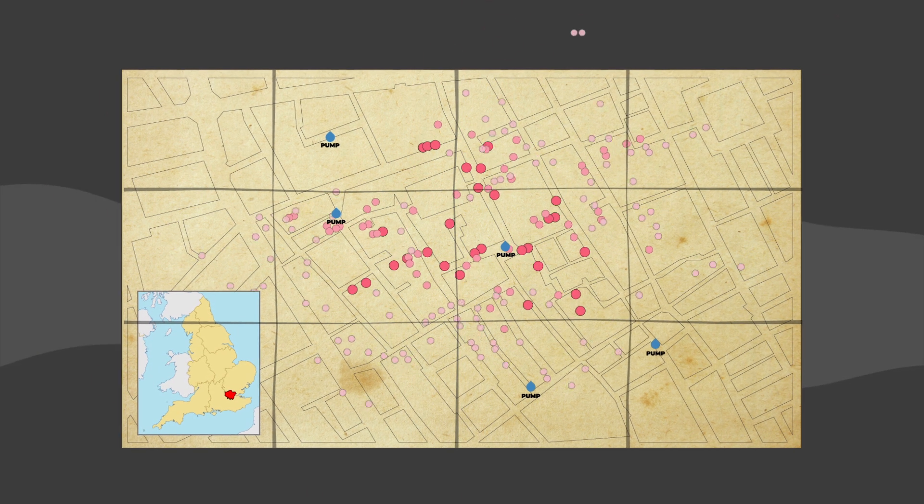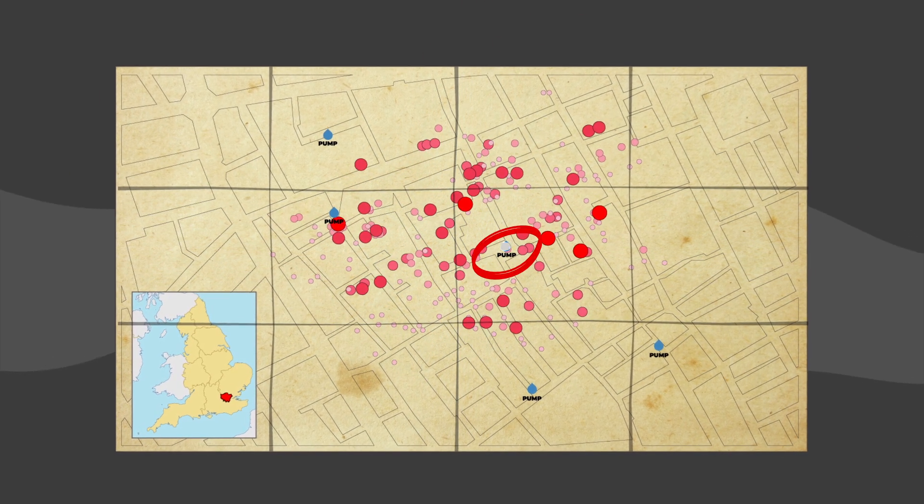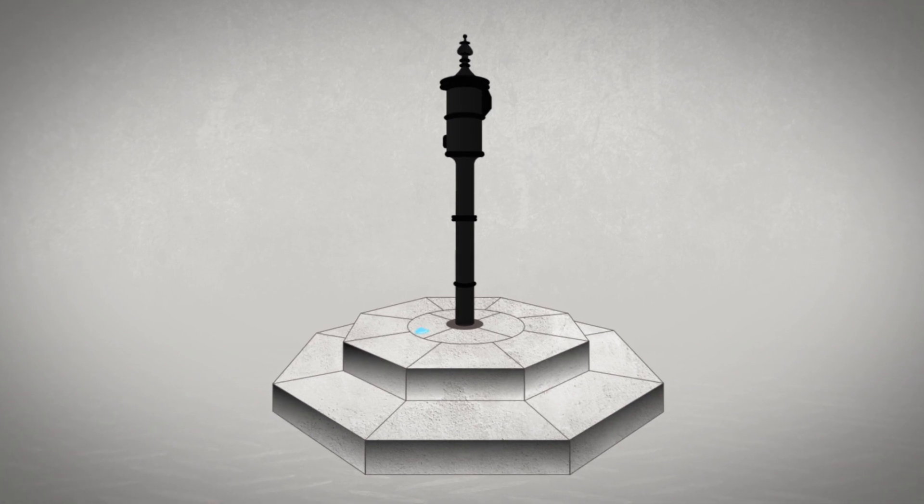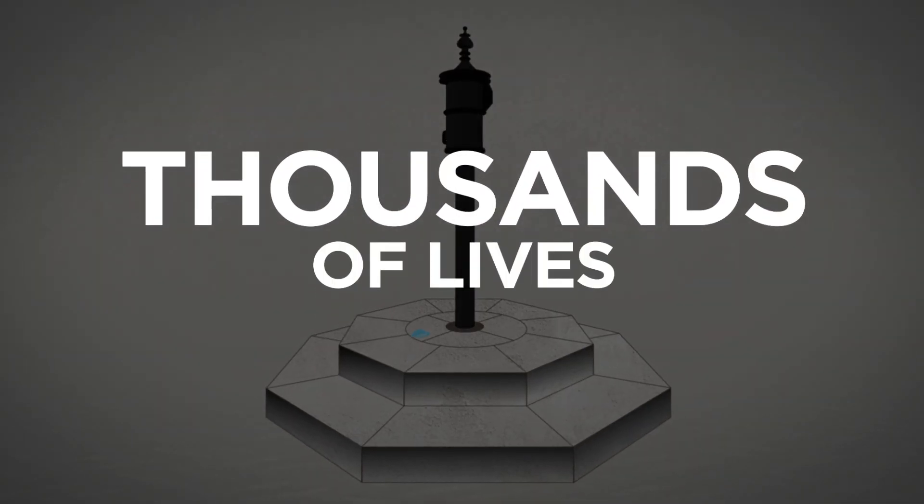he stopped a widespread cholera epidemic that threatened to shake London to its core. By mapping reported cases from around the city, he traced the source of the outbreak to a single contaminated water pump and disabled it, saving thousands of lives.